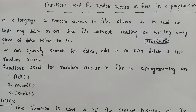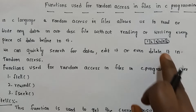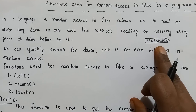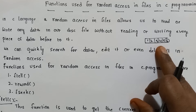First, we will discuss random access in files. In C language, random access in files allows us to read or write any data at a specific position without reading or writing every piece of data before it. In C programming language, we can read or write data at a particular position. This is random access.